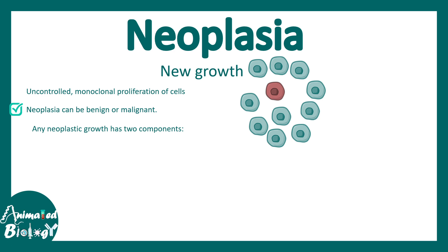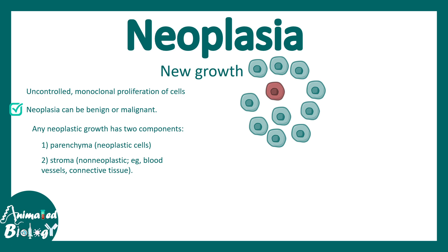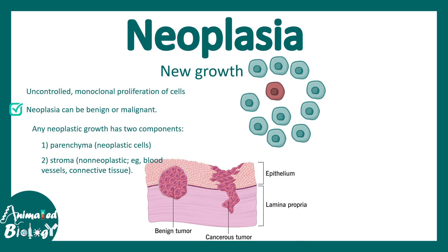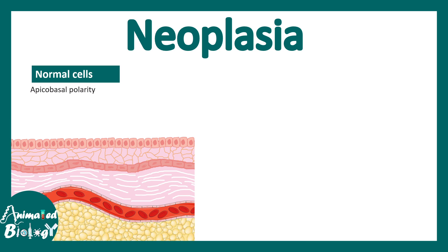Any neoplasia has two components: a parenchyma and a stroma, which includes blood vessels and connective tissue. Here we show a benign tumor and a cancerous tumor, which we'll discuss in a bit more detail.